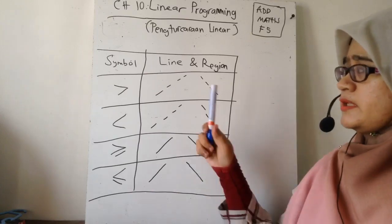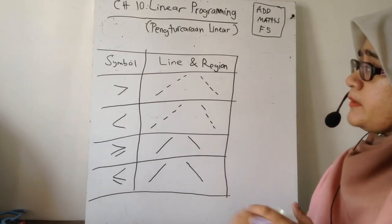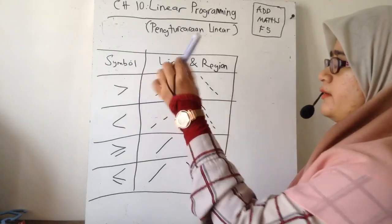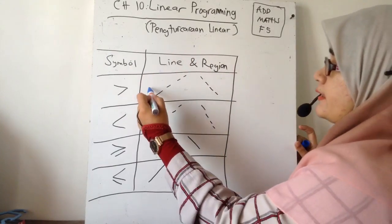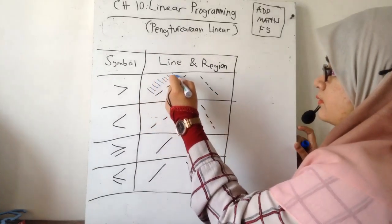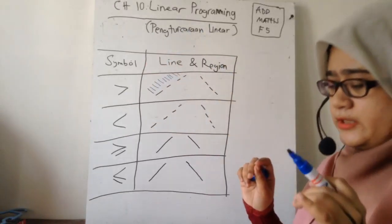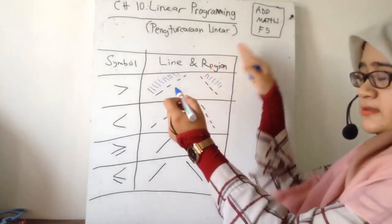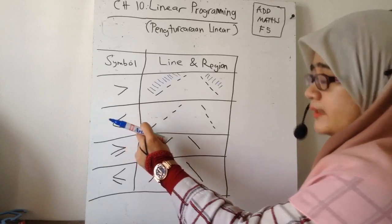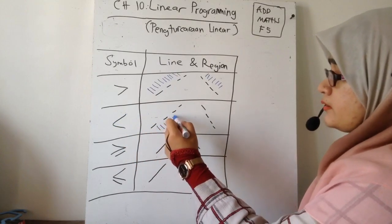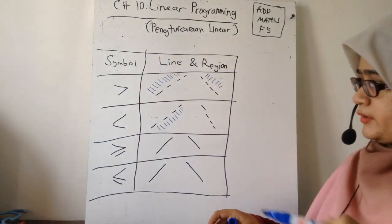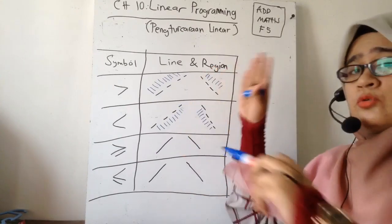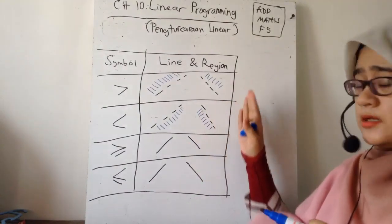Kita nak belajar macam mana kita nak lorekkan sekarang. Lorekkan yang pertama - bila dia more, lebih besar, more and equal - kita tengok garisan ni. Kalau more, dia akan di bahagian atas kepada garisan. Kalau less, dia akan ke bawah - lebih kecil. Kita tengok atas ke bawah: kalau atas untuk more, kalau bawah untuk less. Lebih besar, lebih kecil.